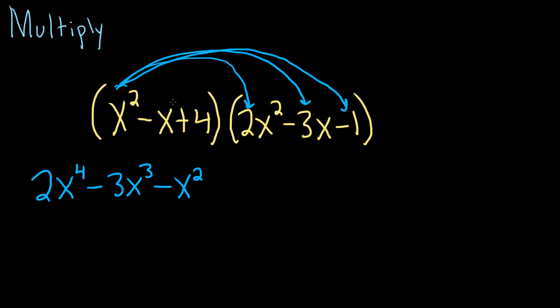Now let's do the same thing with negative x. Negative x times 2x squared gives us minus 2x cubed - we add the exponents. Negative x times negative 3x is plus 3x squared, since negative times negative is positive. And negative x times negative 1 gives us positive x. Almost there.